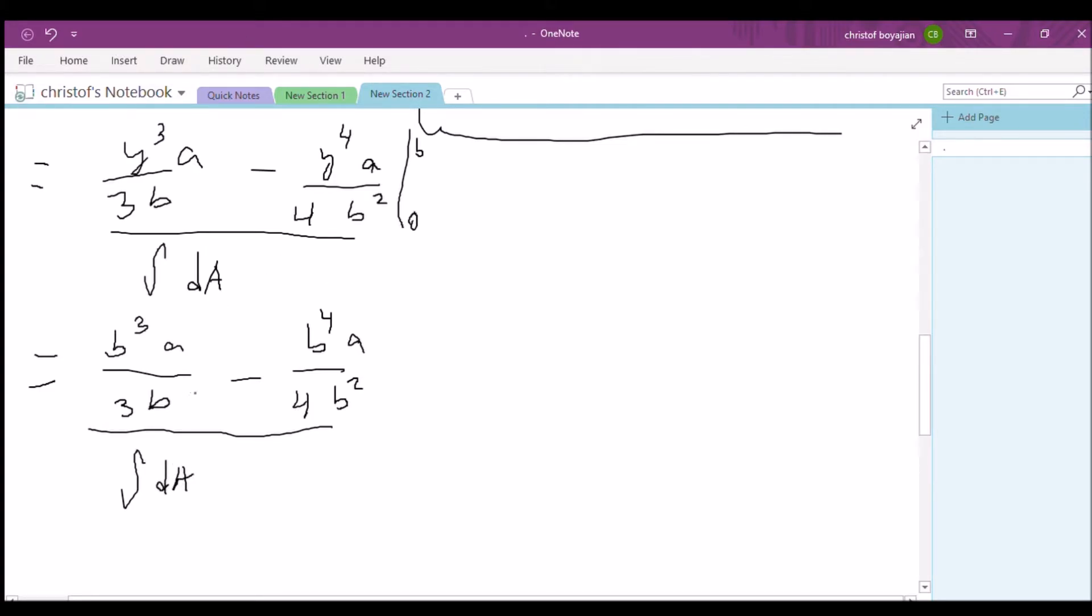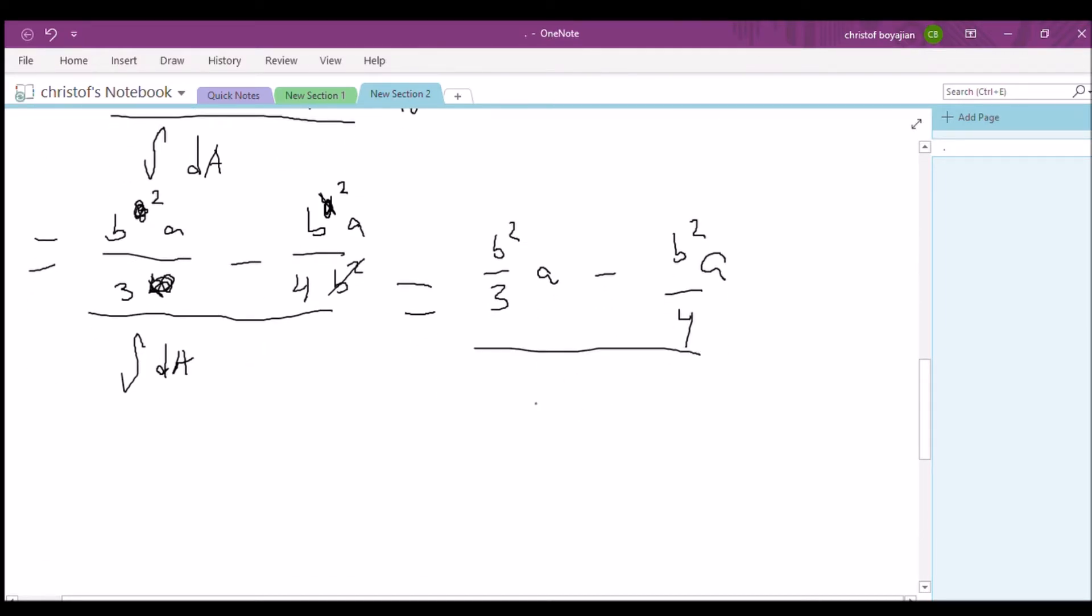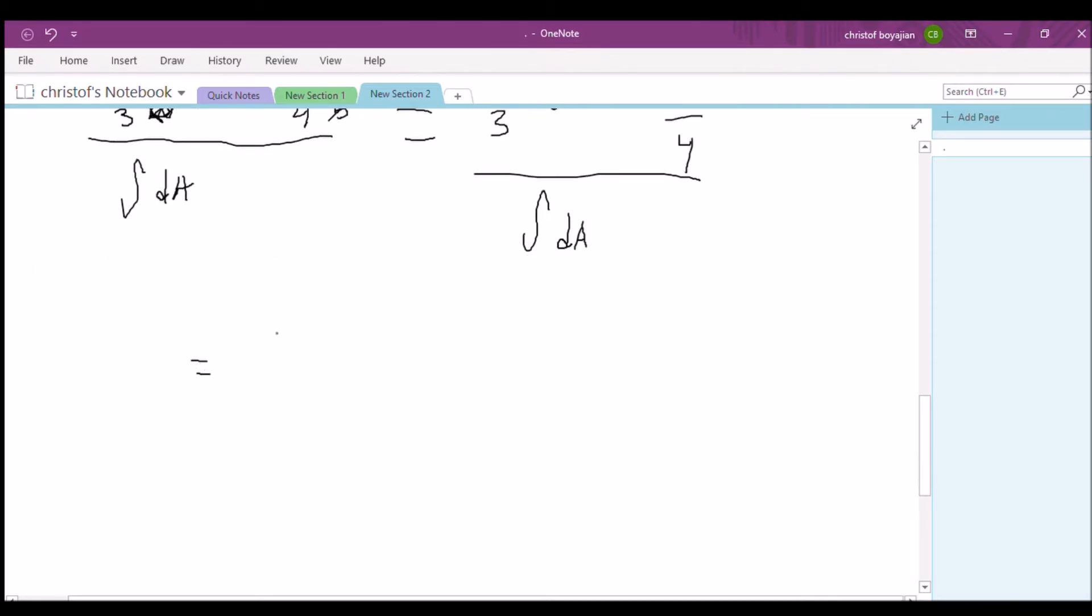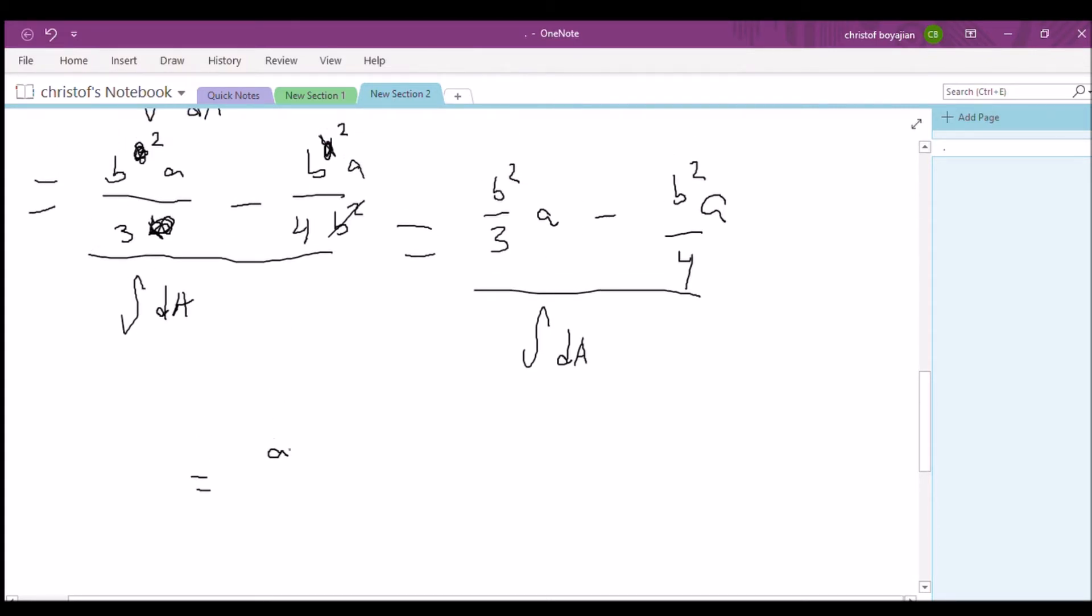All right, so now we can see that we can actually cancel out a couple of these terms, so I'm going to denote that as cancellation of a couple of our b factors. All right, so this should simplify to b squared over 3 times a minus b squared times a over 4. Now we can combine these because these are like terms. All right, now if we combine these, let's get a common denominator of 12. It should be 4 over 12 minus 3 over 12, so we should end up having a b squared over 12 divided by our dA.